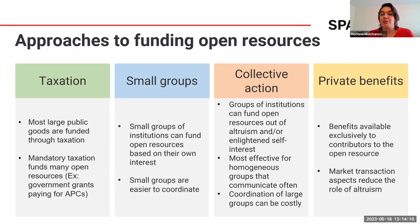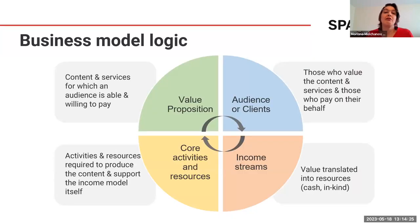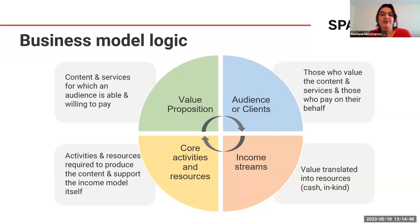What all these approaches to funding open resources have in common is that they all follow the same business model logic. For a business to function properly, it requires four aspects working in tandem and creating a cyclical process. First, there is value proposition — defined as the content and services for which an audience is able and willing to pay. The more unique, the stronger your value proposition. That value needs to be very well communicated to the audience and demonstrated as well.